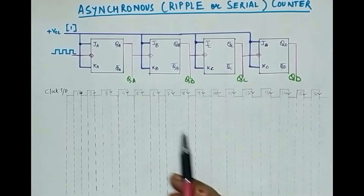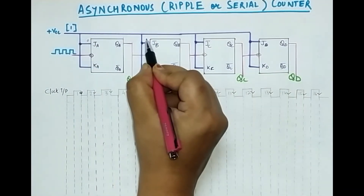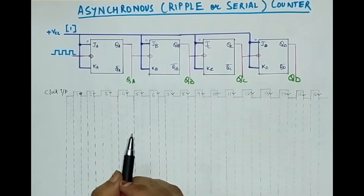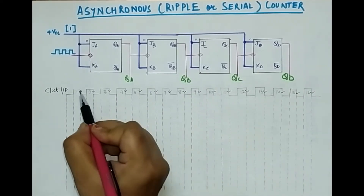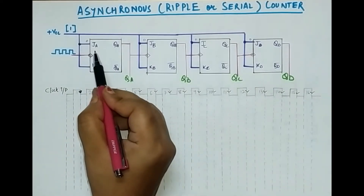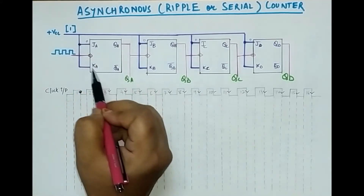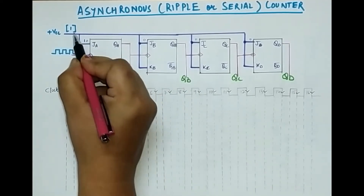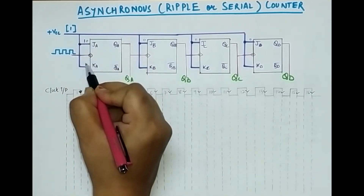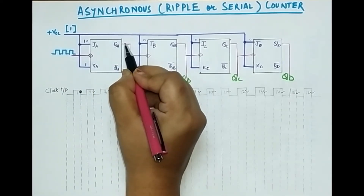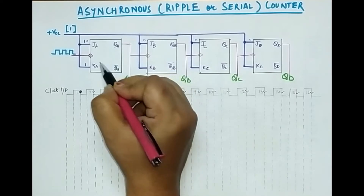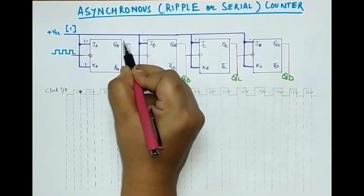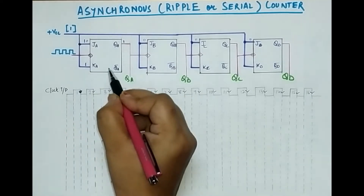Suppose in the initial condition all the flip-flops were at 0, 0, 0, 0. When the first transition will happen — when this clock pulse changes from 1 to 0 — then it will automatically change into 1, because I have connected J and K with VCC. When J=1 and K=1, the operation of the JK flip-flop is toggle, so the previous output of 0 will complement to become 1. So whenever there is a change in the clock pulse, the output will change.